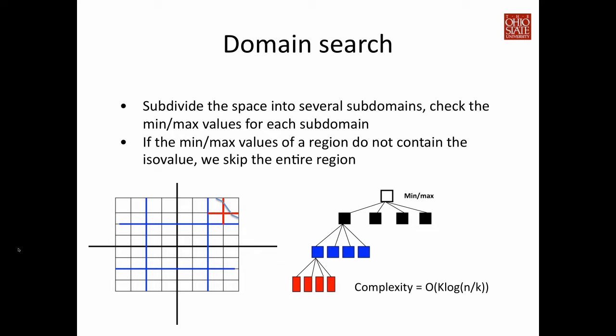Researchers have reported that the complexity of spatial subdivision is on the order of k log(n/k), where k is the output isosurface size and n is the total number of voxels. The goal of designing an isosurface search algorithm is to be output-sensitive — that is, the cost of the algorithm is proportional to the number of isosurface cells. If the isosurface only intersects with a small number of cells, ideally the algorithm should only need to touch those cells, though in practice this is not always possible without sufficient knowledge of the data.